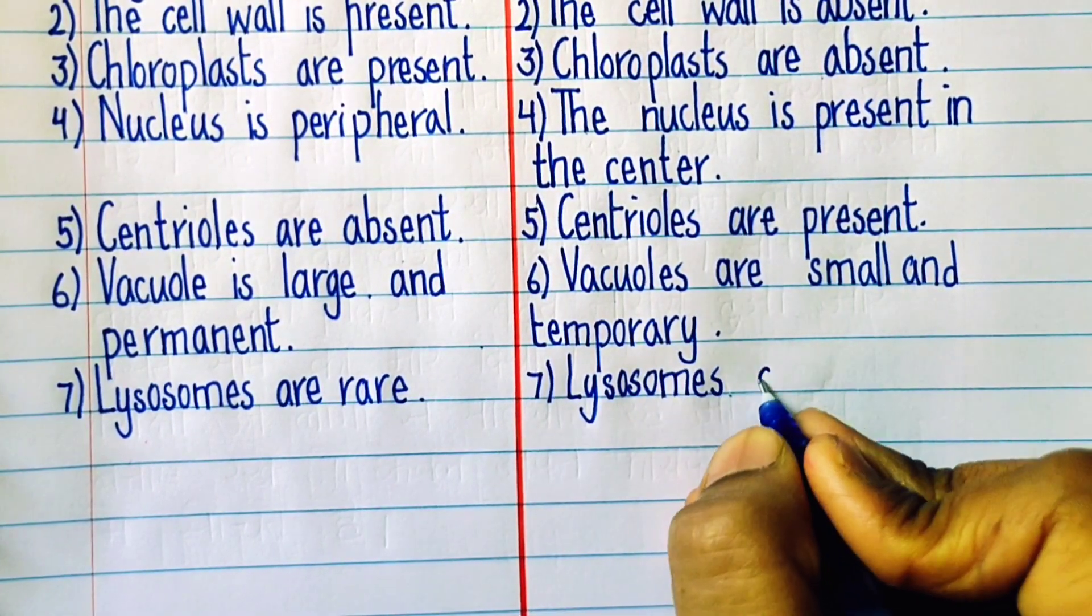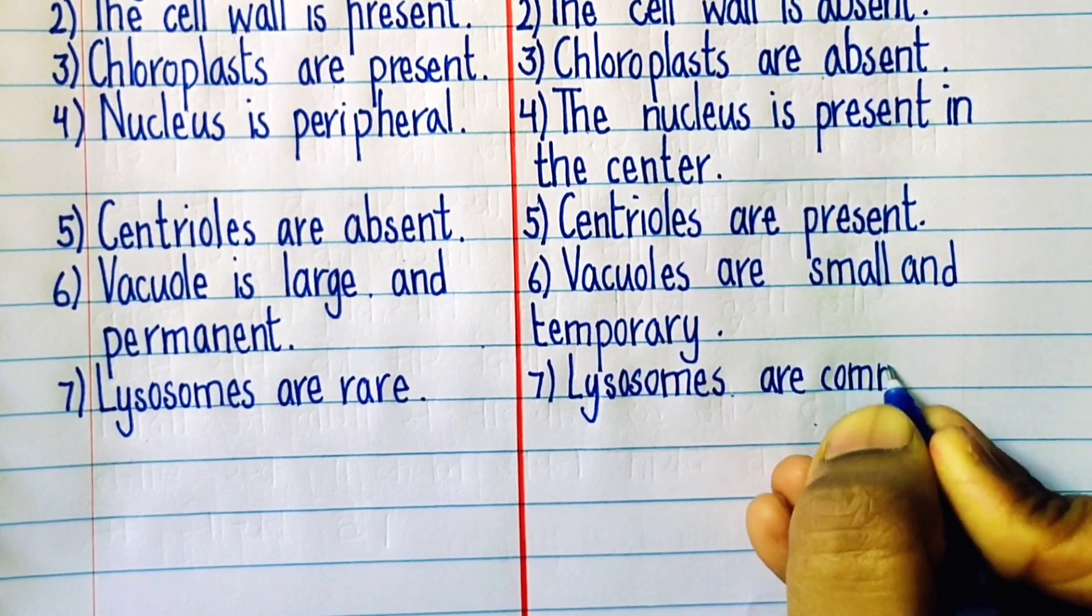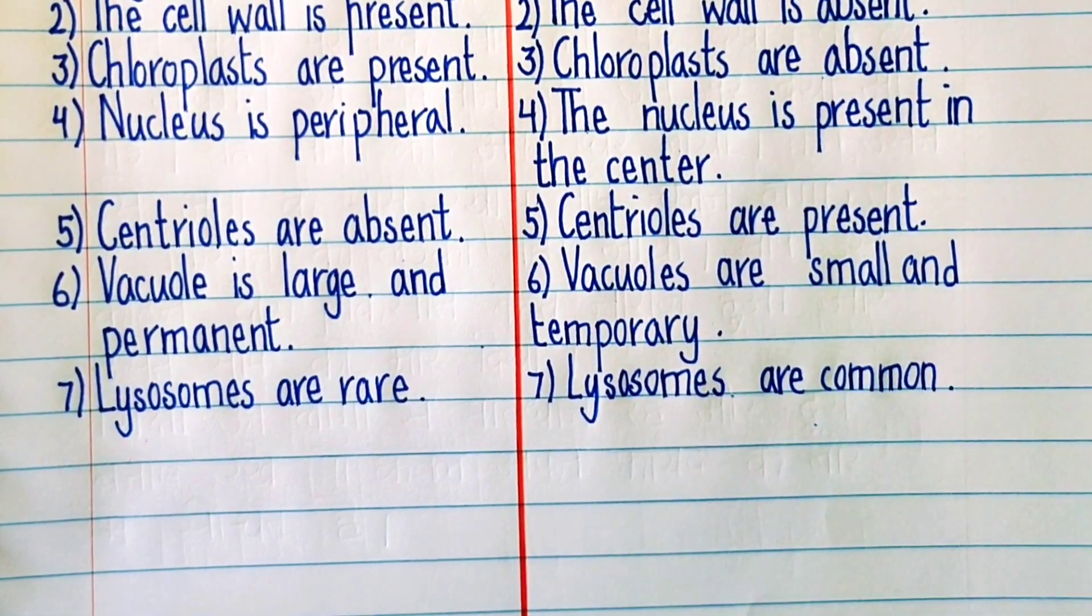Seventh point: In plant cells, lysosomes are very rarely seen, whereas in animal cells, lysosomes are very common.